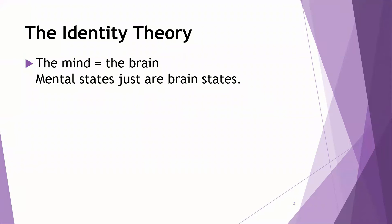So what is it? The identity theory is the most simple theory of the mind. It says that the mind just is the brain. The mind and the brain are identical. It's the same thing. There's just one thing that we're talking about. The brain is the mind. Mental states are just brain states.